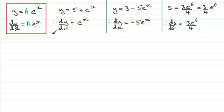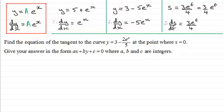Now we can apply this result to a typical question you're likely to find: find the equation of the tangent to the curve y equals 3 minus 2e to the x over 5, at the point where x equals 0, and give your answer in the form ax plus by plus c equals 0 where a, b and c are integers. If you'd like to have a go at this, pause the video now, then come back and check your solution against mine.